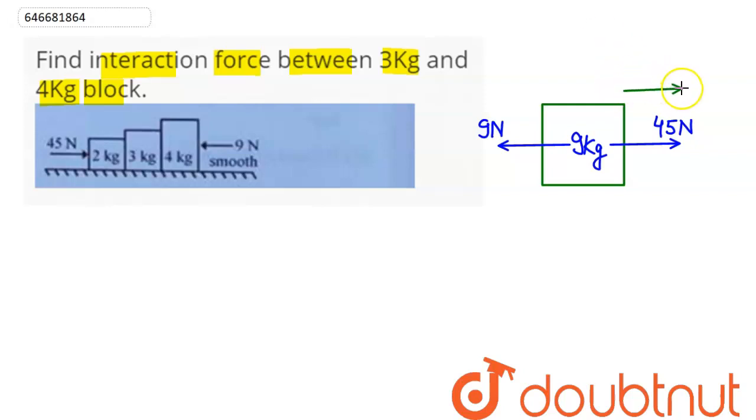Hence system will accelerate along plus x direction, which means here pseudo force on this whole system will be acting along minus x direction with magnitude here as 9a. Hence we can say here this coming out as 45 is equal to 9 plus 9a.